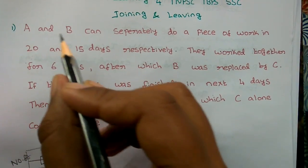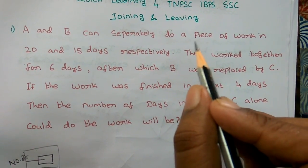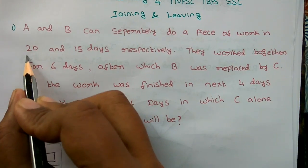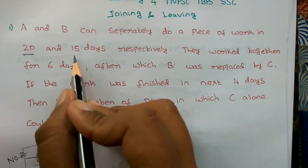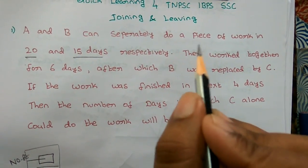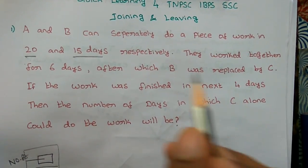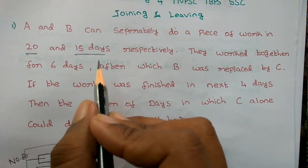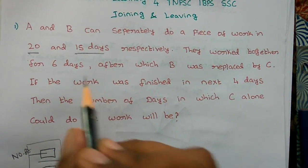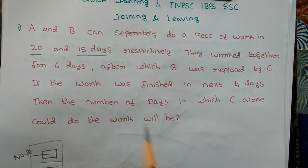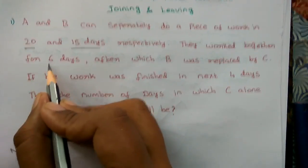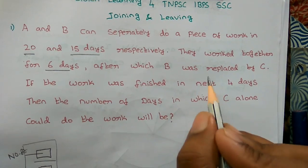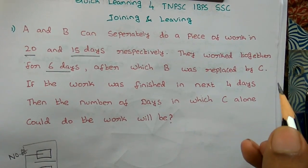First, A and B can separately do a piece of work in 20 and 15 days respectively. They work together for 6 days.